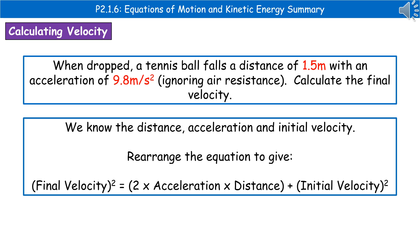and we know the initial velocity of zero. So what we can actually do there is rearrange that equation from our data sheet to give us our final velocity squared is 2 times acceleration times the distance plus initial velocity squared.